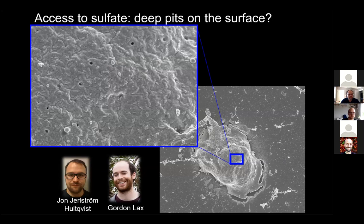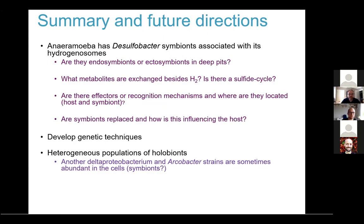In summary, we were able to find that Aneroamoeba ignava and Aneroamoeba flamyloides seem to carry Desulfobacteria symbionts tightly associated with their hydrogenosomes, even though separated by or found inside a vacuole. We were not able to determine if they sit in deep pits as true endosymbionts or as ectosymbionts deep inside the cell body. We suspect hydrogen is the main driver, but other metabolites may also be exchanged — perhaps including a sulfide cycle.